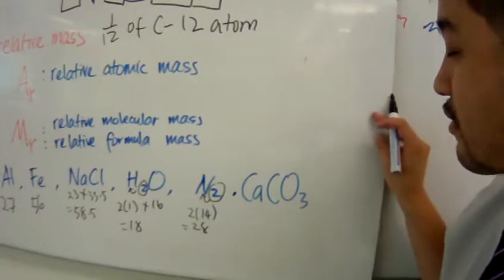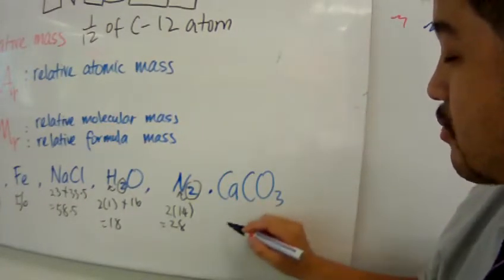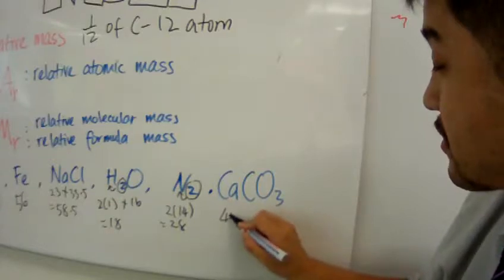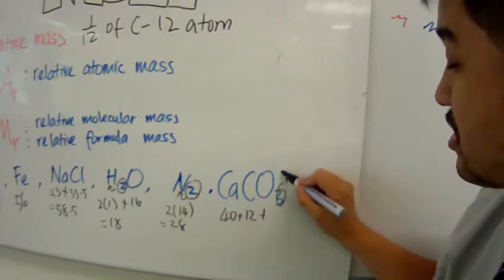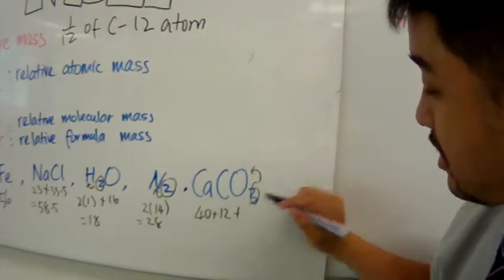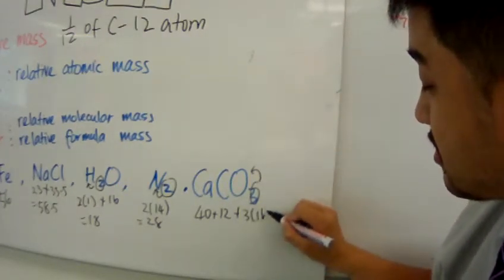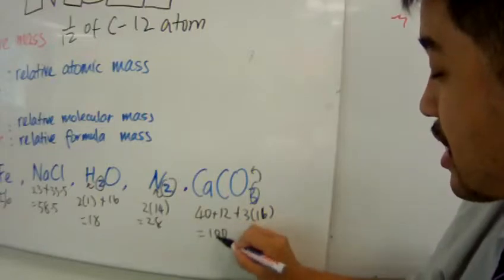And now we have calcium carbonate. What's the mass of that? Well, calcium is forty plus twelve, plus three oxygens. And that would give me three times sixteen. And so you add them up, that should be about a hundred. So these are all relative mass.